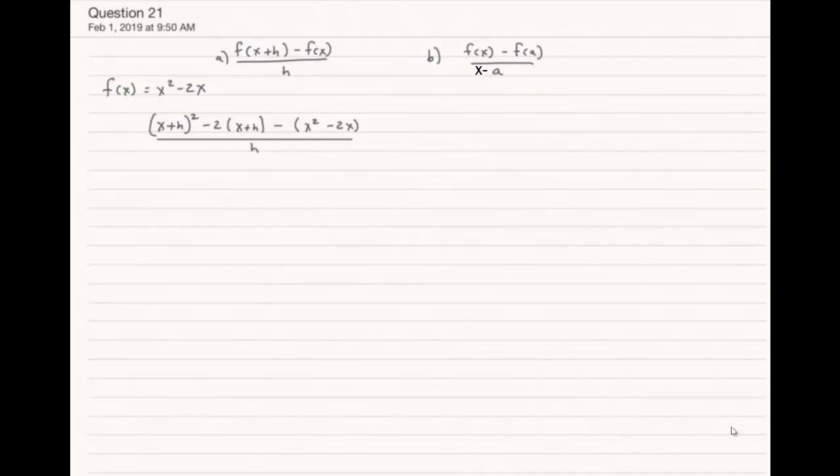So let's go ahead and multiply out the (x + h)², and that works out to be x² + 2xh + h².